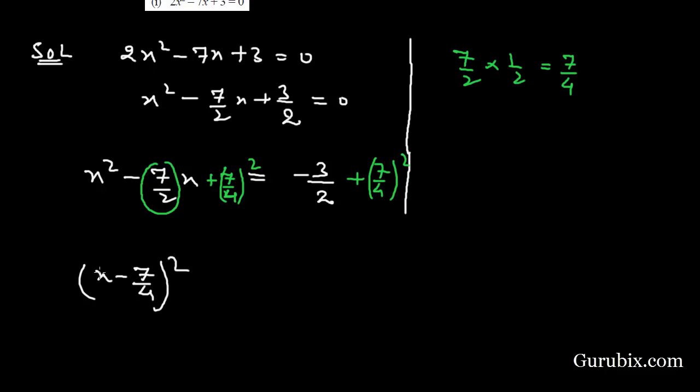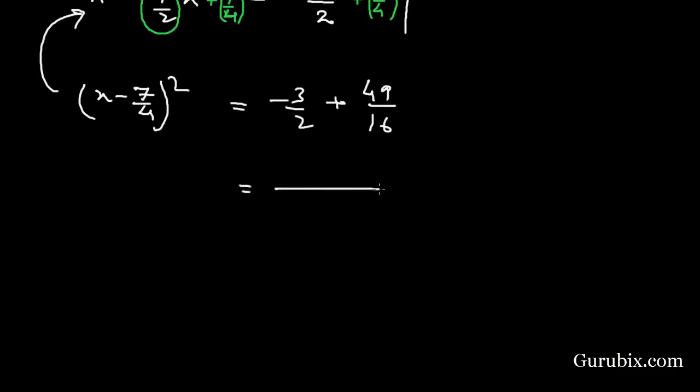If we expand this value, then it will be equal to this term. Here we have -3/2, here we have 49/16. We shall take LCM of 16 and 2, then we have 16. If we divide 16 by 2, we get 8. 8 times 3 is 24, here we have 49. This equals 25/16. Here we have (x - 7/4)².